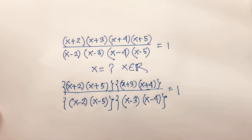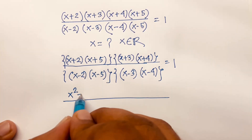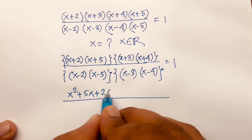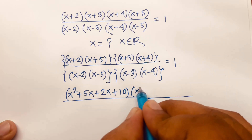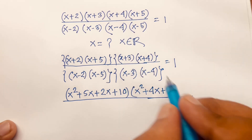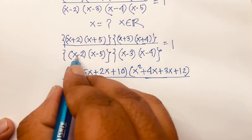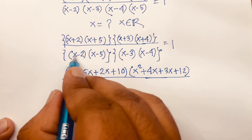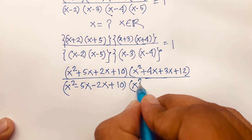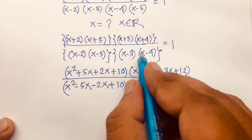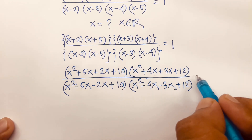Then I can expand: x times x gives x squared, x times 5 gives 5x, 2 times x gives 2x, and 2 times 5 gives 10. For the next bracket: x squared plus 4x plus 3x plus 12. On the denominator side: x squared minus 5x minus 2x, and minus minus gives plus 10. Then x squared minus 4x minus 3x, and minus minus gives plus 12, all equal to 1.